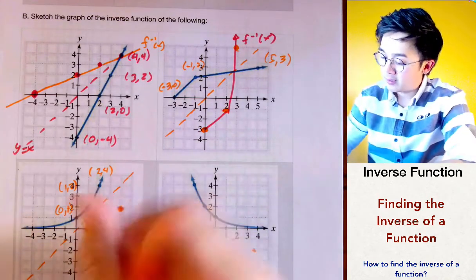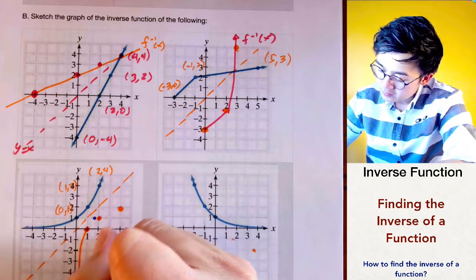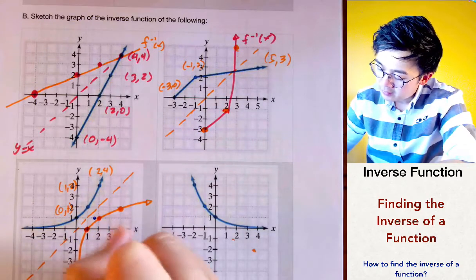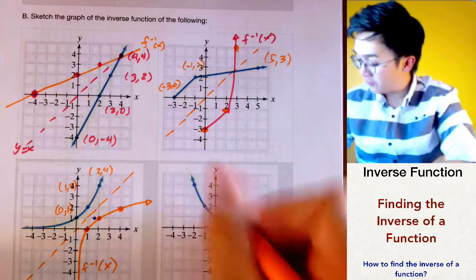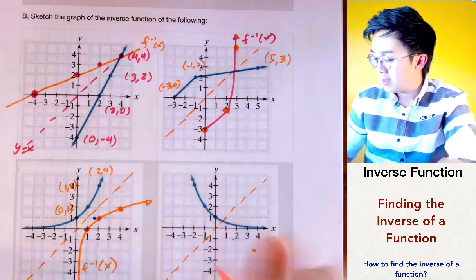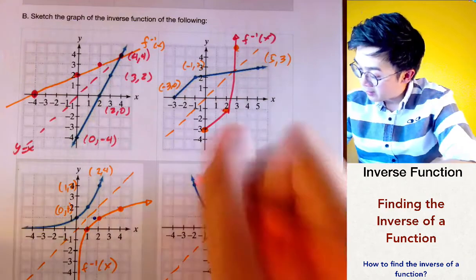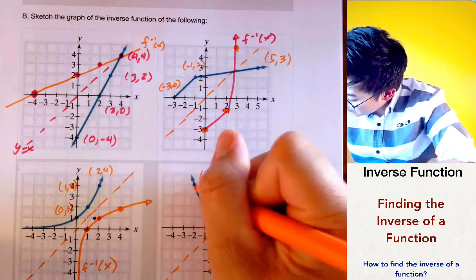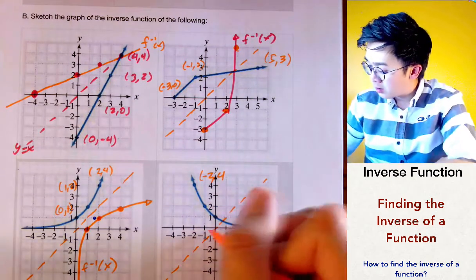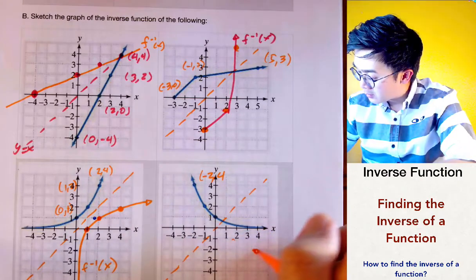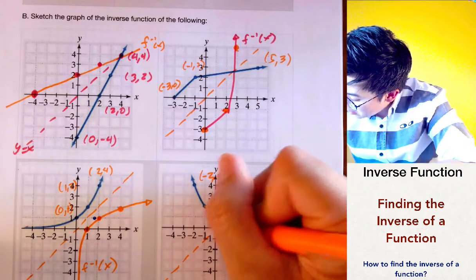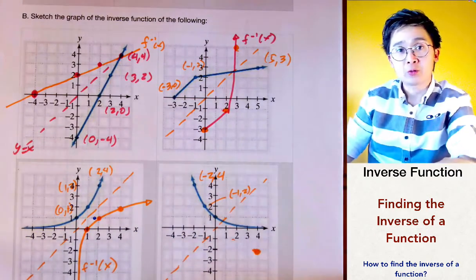Connecting these reflected points gives us our inverse function for the third graph. For the last function, we start with the point (-2, 4), whose inverse is (4, -2). Then the point (-1, 2) gives us the inverse point (2, -1).